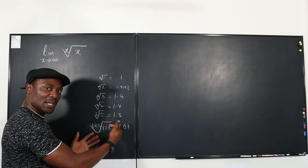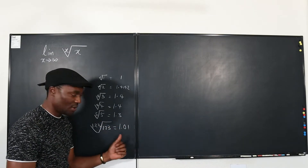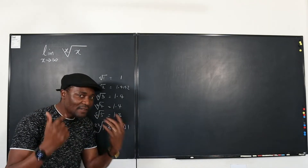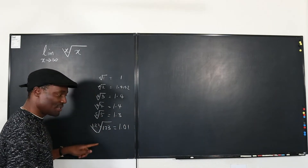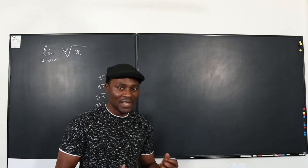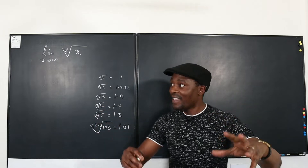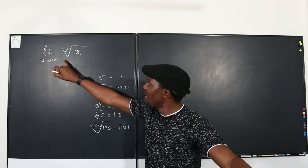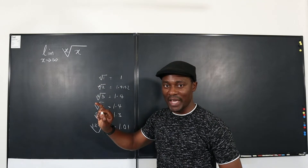You notice that as you keep changing these numbers and as X gets bigger, your answer approaches one. We don't know if it's going to go below one, but the decimal keeps getting smaller while the one is retained. That gives me an idea by observation that as these numbers get bigger, by the time you approach infinity, your answer will be one.